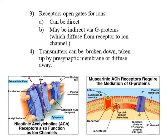Once the transmitter's been released, it diffuses across that synaptic cleft. At some point we have to remove it. So it's going to go across, it's going to affect that post-synaptic membrane, but we want to be able to remove that transmitter.